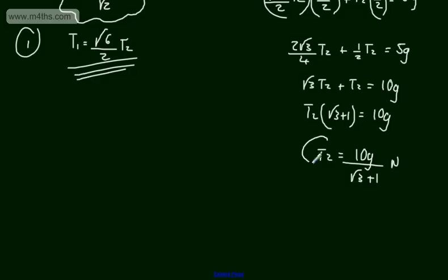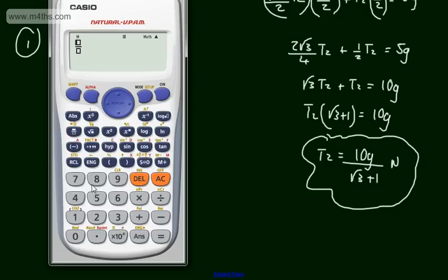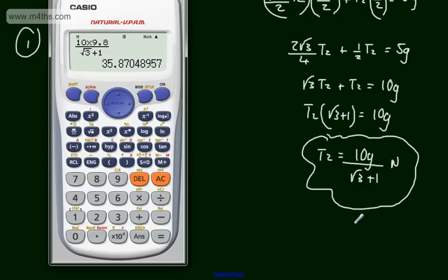Computing the numeric value: T2 equals 10 times 9.8 divided by (root 3 plus 1), which gives approximately 35.9 Newtons to three significant figures.